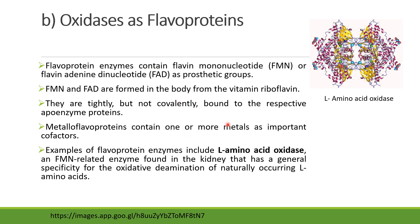The best example of a flavoprotein enzyme acting as an oxidase is L-amino oxidase. This L-amino oxidase has FMN (flavin mononucleotide) and is found in the kidney. It is involved in oxidative deamination of L-amino acids — so this is an oxidase which is a flavoprotein having FMN.